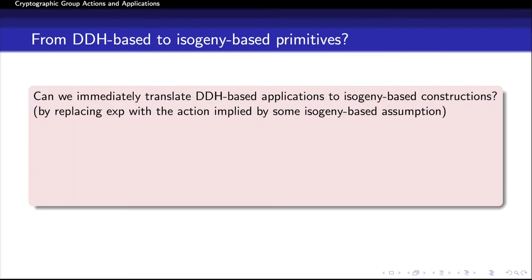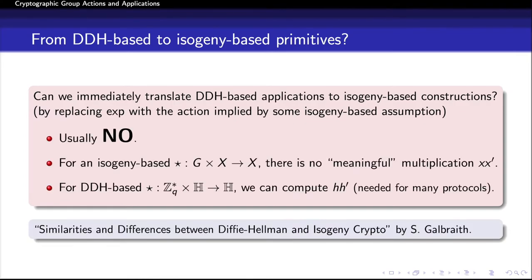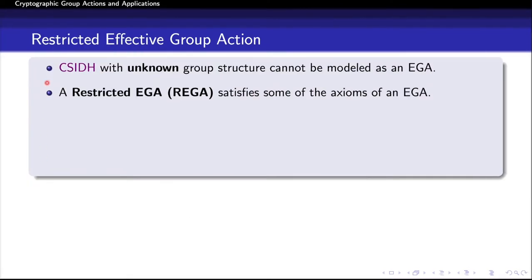A natural question is: can we immediately translate DDH-based cryptographic applications to isogeny-based constructions just by replacing exponentiation with the action from an isogeny-based assumption? The answer is usually no. For an isogeny-based action, we don't have a meaningful multiplication of two set elements x and x', whereas in the DDH-based action, one can easily compute the product of H and H'. This multiplication is crucial for many DDH-based crypto applications. You can take a look at some great slides prepared by Stephen Galbraith on similarities and differences between Diffie-Hellman and isogeny crypto.